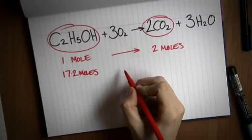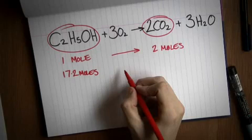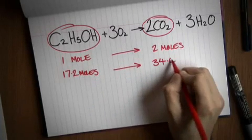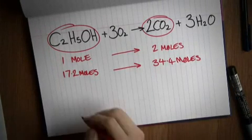Right, so you said earlier from the equation we know that for every mole of ethanol you get two moles of CO2, carbon dioxide. So that means do I get then two times 17.2 moles equals 34.4 moles of carbon dioxide. Spot on.